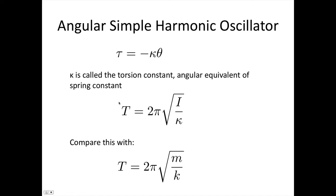We end up with a period which is equal to 2 pi square root of I on kappa. And you can compare this with the normal pendulum, where we've got 2 pi square root of m on k.